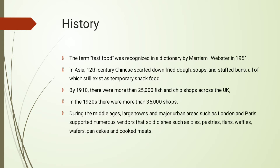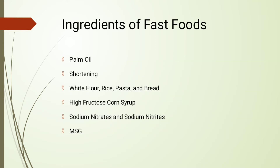By 1910 there were more than 25,000 fish and chip shops across the UK, and in the 1920s there were more than 35,000 shops. During the Middle Ages, large towns and major urban areas such as London and Paris supported numerous vendors that sold dishes such as pies, pastries, flans, waffles, pancakes, and cooked meats.